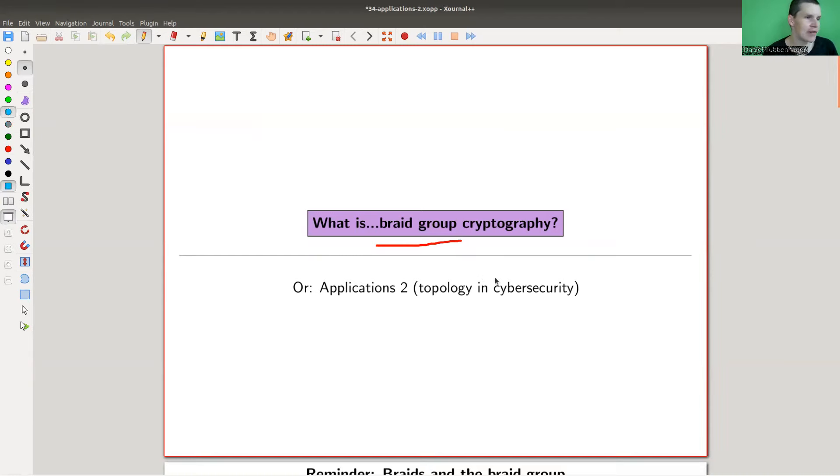And I would like to explain how they can be used in cryptography. So if you send your emails and you want them to be secure, then you should be interested in cryptography, because that's essentially what cryptography does. So topology in cryptography, which is application two, will nicely wrap up the whole series here.